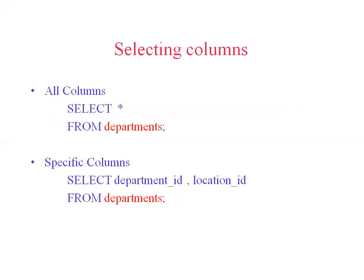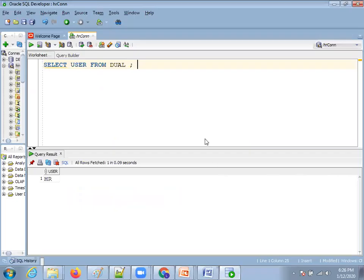Coming to the next slide, in the SELECT clause you have the option to mention either a single column or multiple columns. If you observe the first statement, it says SELECT * — asterisk or star means all. It allows you to retrieve all columns from the respective source. In the next example, if you want to retrieve only specific columns, you mention those appropriate column names. In the SELECT statement, you can not only mention column names but also mathematical expressions and available database functions.